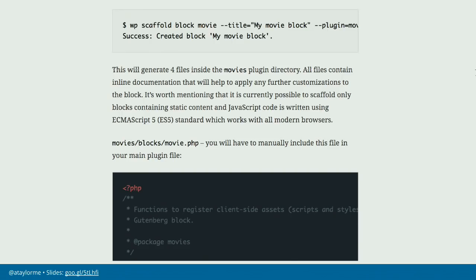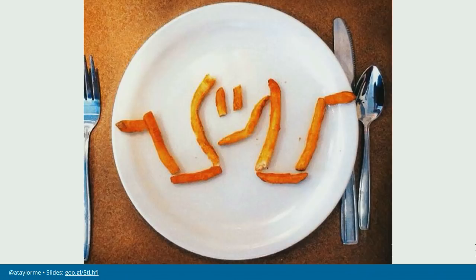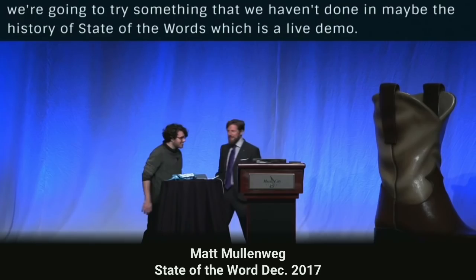As they moved further down the road, they released some tools. WordPress has a command line called WP-CLI, similar to Drush — so you could scaffold a plugin and create your own custom block. That worked well for developers, but it still didn't reach that wider audience. So there was still this kind of, 'what's going on here?' feeling.